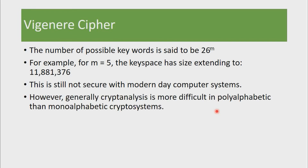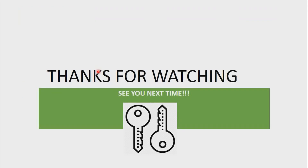Generally, cryptanalysis is more difficult when you compare polyalphabetic and monoalphabetic ciphers. With a simple monoalphabetic cipher like the Julius Caesar cipher you only get 26 keys, but with a polyalphabetic cipher you increase the number of keys significantly. Even though it's still not very secure by modern standards, it is much more secure than a monoalphabetic cipher. That was the Vigenère cipher — thanks for watching and I'll see you next time.